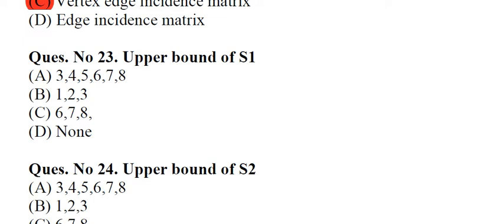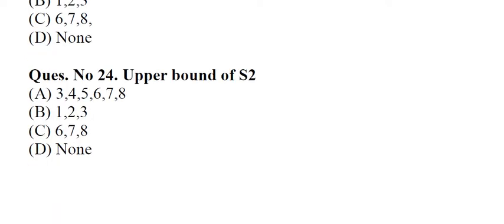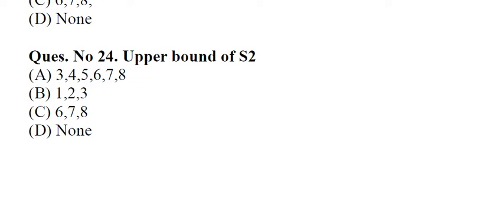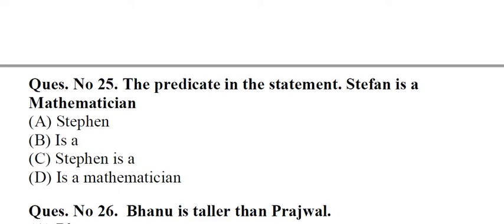Question number 23: Upper bound of S1. A. 3,4,5,6,7,8, B. 1,2,3, C. 6,7,8, D. None. Answer: A, 3,4,5,6,7,8. Question number 24: Upper bound of S2. A. 3,4,5,6,7,8, B. 1,2,3, C. 6,7,8, D. None. Answer: C, 6,7,8.